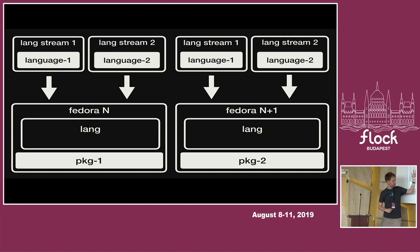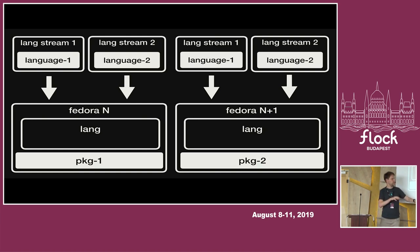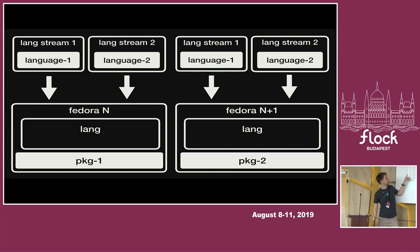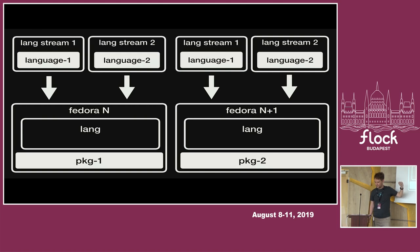I can build both versions for both Fedora releases. So there's more flexibility in what version you want to have, and you don't need to really care about what Fedora release you have, because it's available for both. There's a space called Lang because we have the Lang modules, and you can think of it as there's just one slot on your system for every module. You can only install one version at the same time.